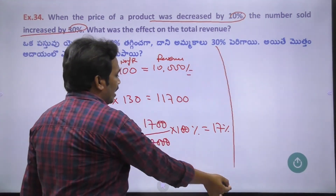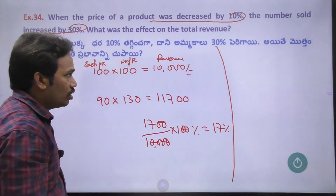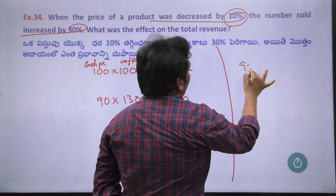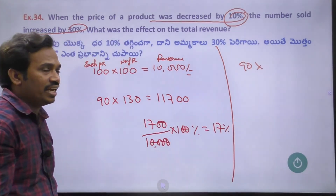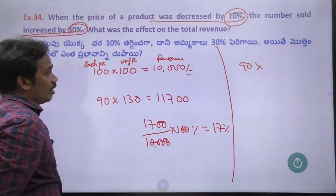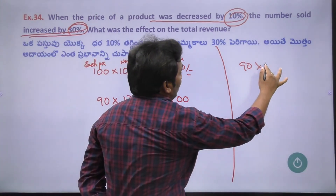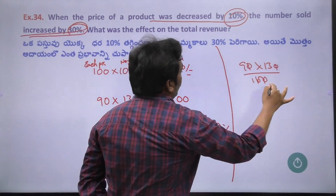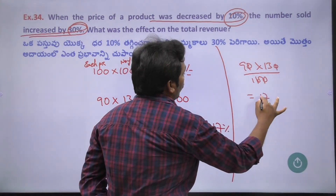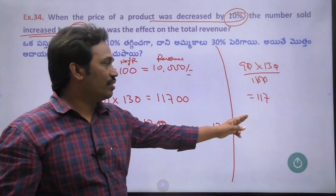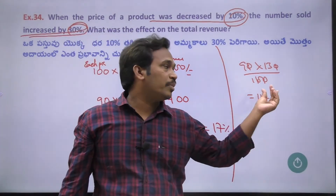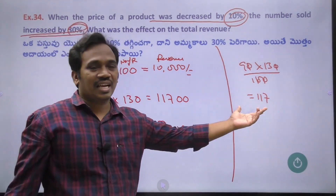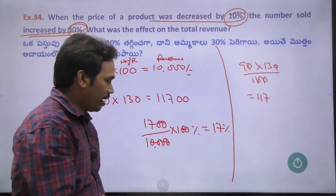So if the price decreases 10%, that means 90 times N items. The number of items increases by 30%, which is 130. Multiplying 90 × 130 divided by 100 gives 117, so revenue increases. It's a simple multiplication calculation. Next one.